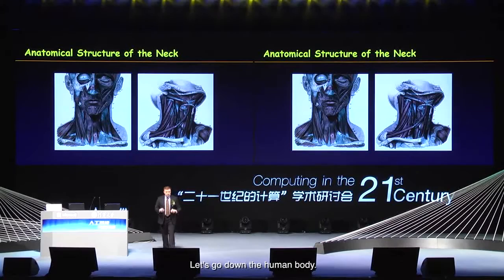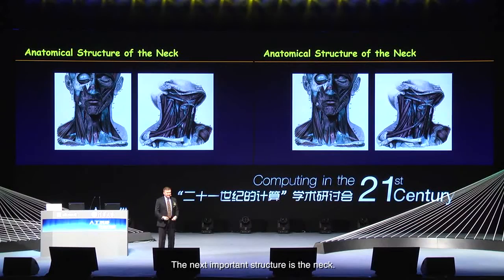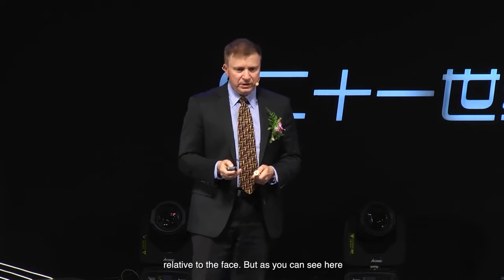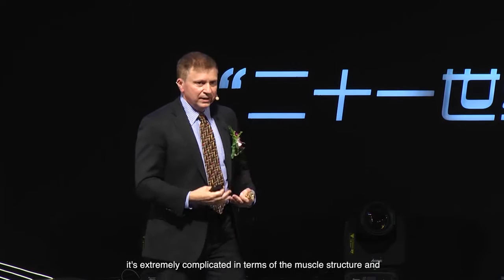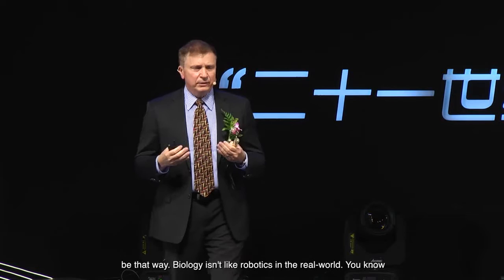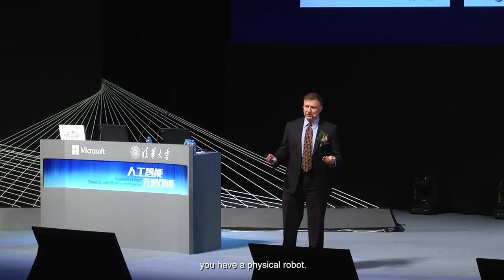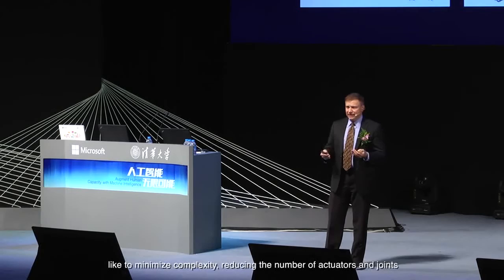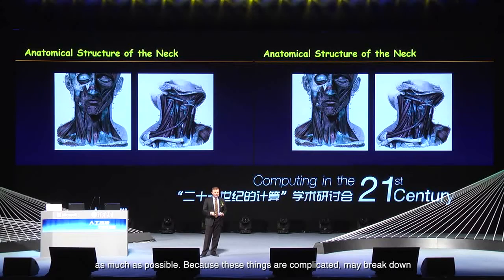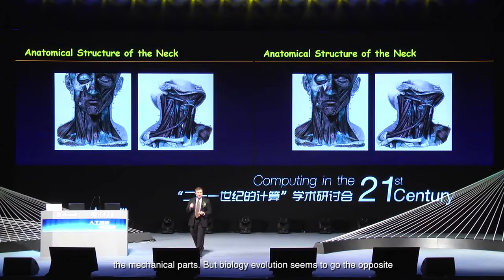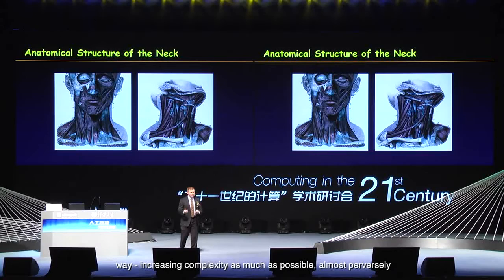Let's go down the human body. The next important structure is the neck, which has been very much overlooked relative to the face. As you can see here, it's extremely complicated in terms of muscle structure and geometries. Biology isn't like robotics — roboticists like to minimize complexity, reducing the number of actuators and joints as much as possible. But biology, evolution seems to go the opposite way, increasing complexity almost perversely. Based on our work, I think it actually helps in controlling these systems — it makes them more flexible in terms of degrees of freedom, and it's easier to control mechanical systems that have lots of actuators.